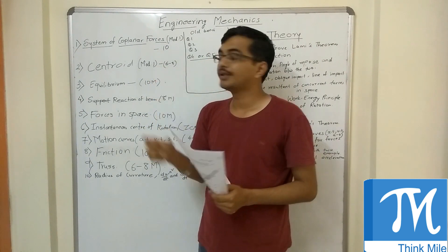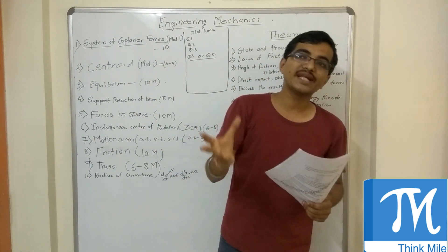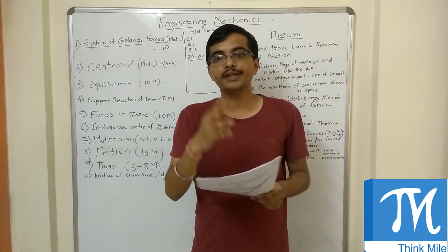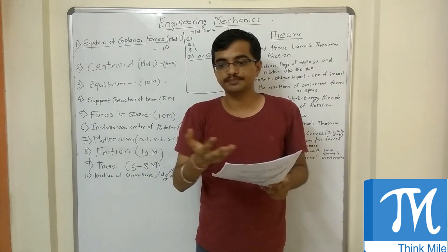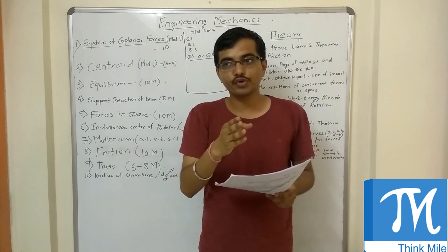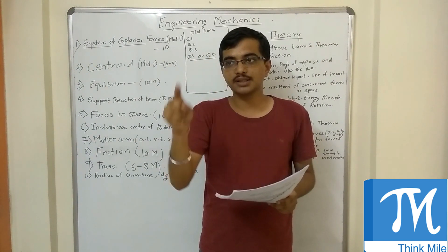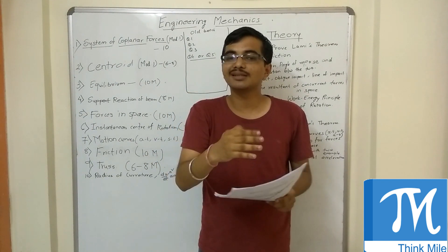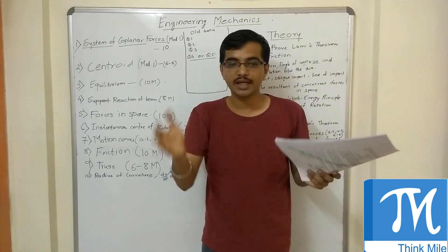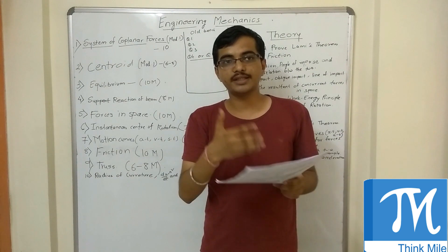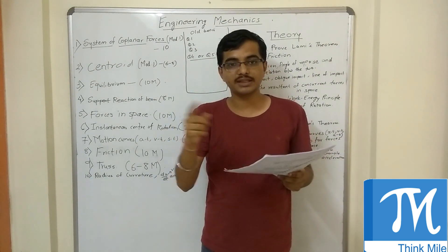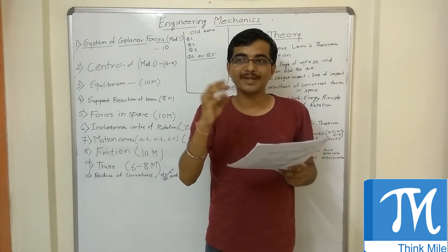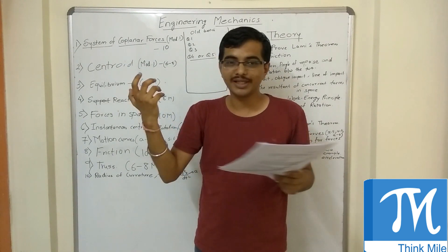Next, coming to centroid. Centroid is again a very simple question, where you might be given a diagram and told to find the centroid. You just have to remember the centroid formula for rectangle, square, circle, and semicircle — there are different formulas for each. Then use the formula x-bar equals sigma(Ai * xi) divided by sigma(Ai). It is again a very simple sum worth around 8 marks.